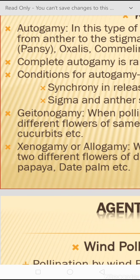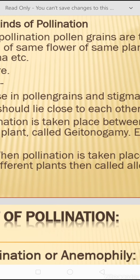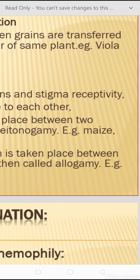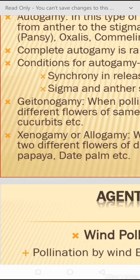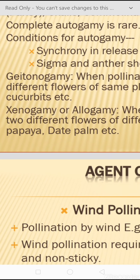The second type is geitonogamy, in which pollen grains are transferred from one flower to another flower of the same plant — the plant is the same but flowers are different. Examples include maize and cucurbits. In genogamy or allogamy, also called cross-pollination, both the flowers and the plant are different, though the species will be the same.